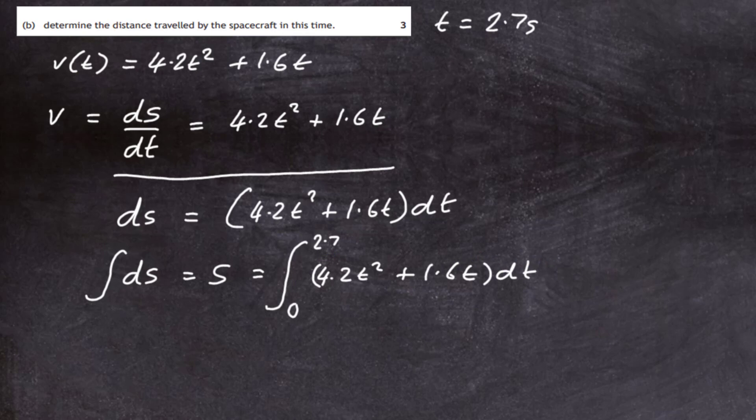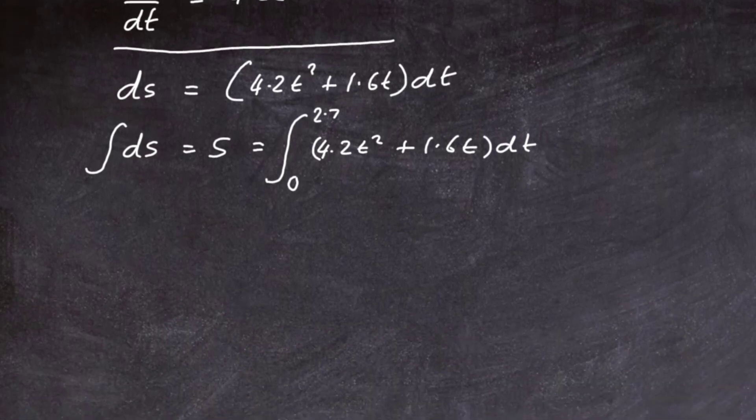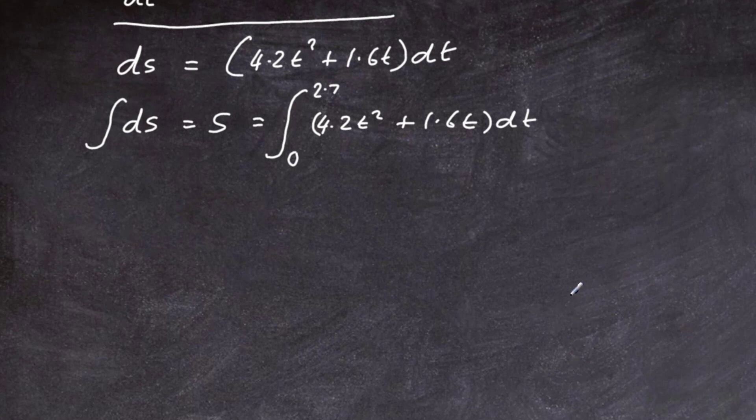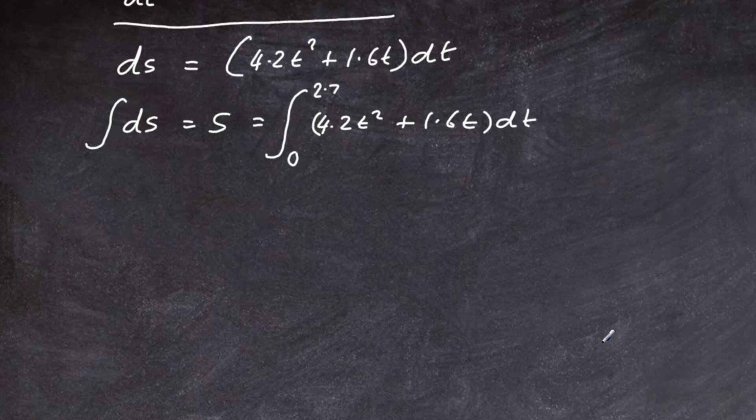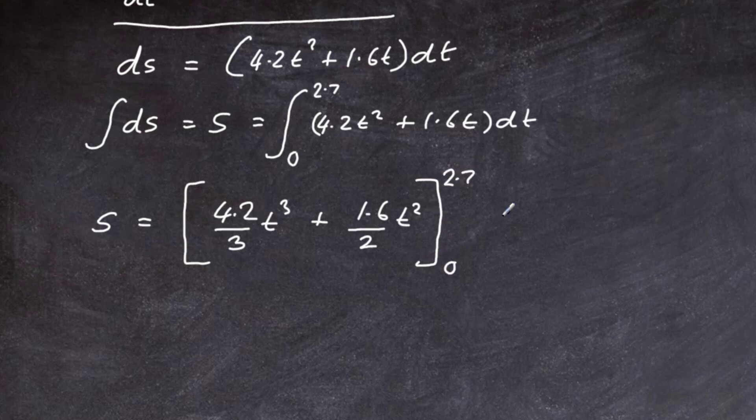So we integrate that expression and put in the limits, and we should get the displacement travelled by the spacecraft from time t equal to 0. Since it's in a straight line, that must be the distance. So let's do the integration. S will equal 4.2 divided by 3 times t to the power 3, plus 1.6 over 2 times t squared, from 0 to 2.7 seconds.